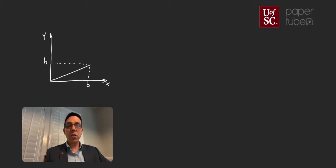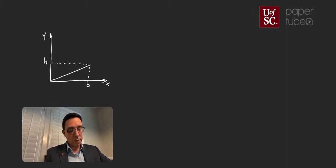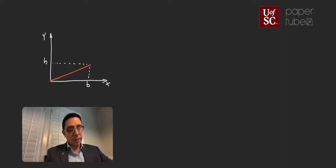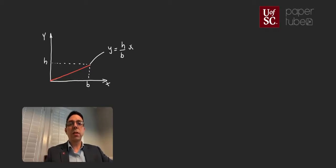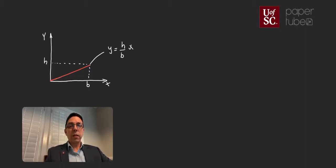Let's develop the equation for the line. We can express y as a function of x. My y is going to be equal to H over B times x. The reason for that is because the slope of that line is H over B and the intercept is zero — the value of the function at x = 0 is y = 0.